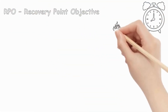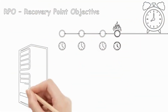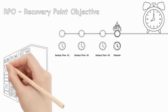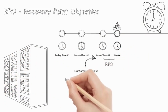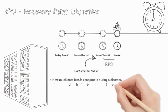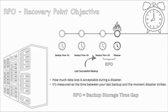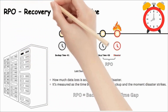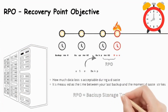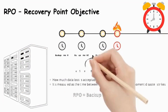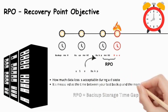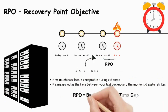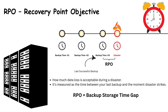First up, let's talk about RPO, or Recovery Point Objective. RPO determines how much data loss is acceptable during a disaster. It's measured as the time between your last backup and the moment disaster strikes. For example, if your RPO is one hour, you're prepared to lose up to one hour of data.